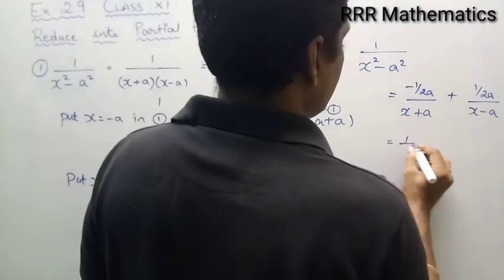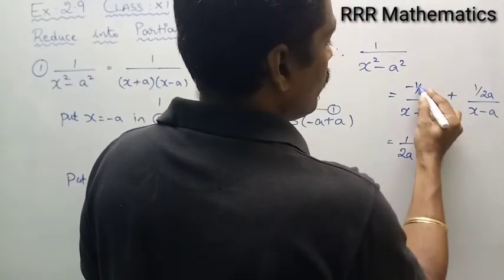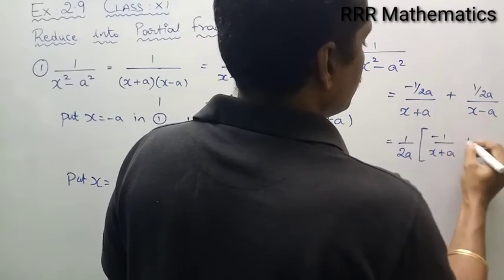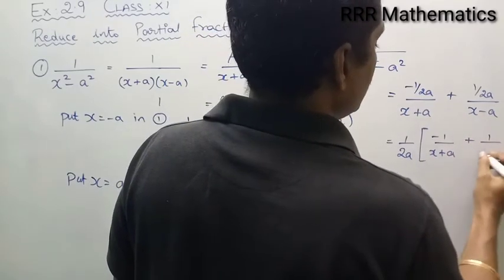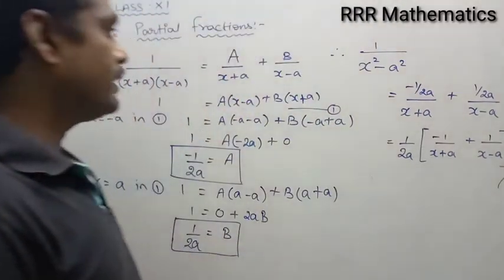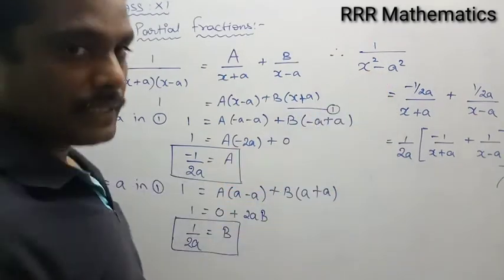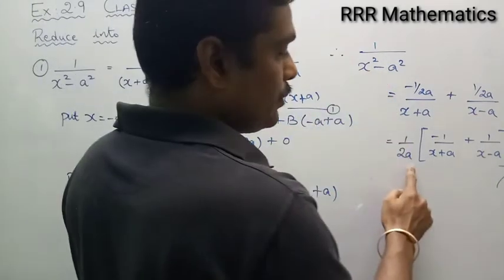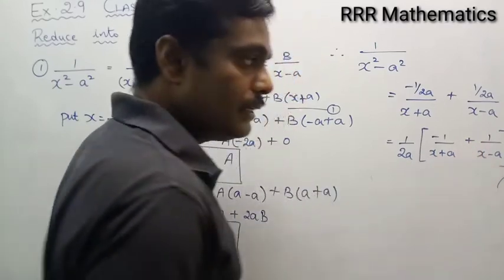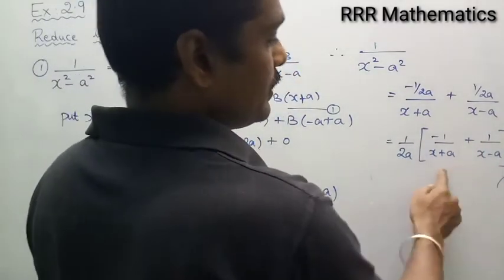Now I can take 1 by 2a as common from the numerator. It becomes 1 by 2a times minus 1 by x plus a plus 1 by x minus a. So the fraction 1 by x squared minus a squared equals 1 by 2a times the quantity minus 1 by x plus a plus 1 by x minus a.